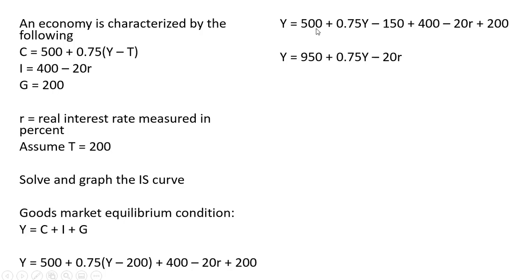Adding up those terms, 500 minus 150 plus 400 plus 200 gives us 950. Subtracting 0.75Y from both sides, the left-hand side now will be 0.25Y = 950 − 20r.